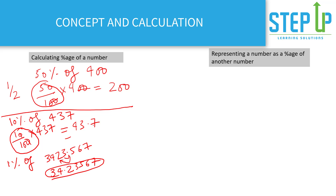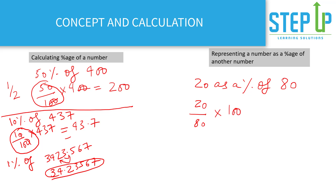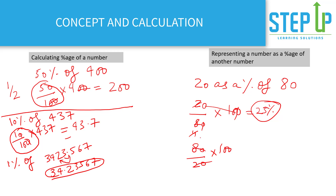Sometimes a question asks: what is 20 as a percentage of 80? Calculate 20 by 80 into 100. Simplify: 20 by 8 is 1 by 4, and 1 by 4 of 100 is 25 percent. Conversely, what is 80 as a percentage of 20? That is 80 by 20 into 100, which is 400 percent.